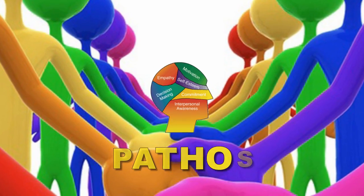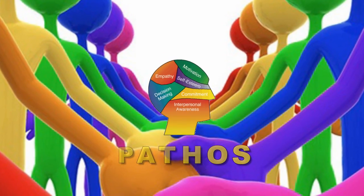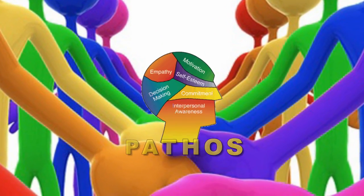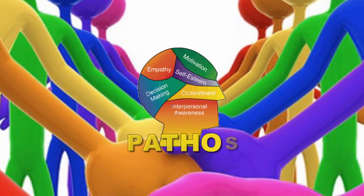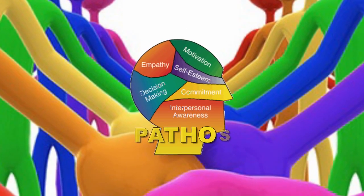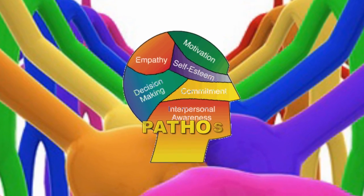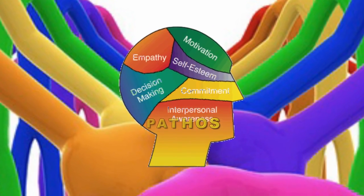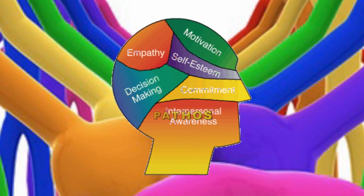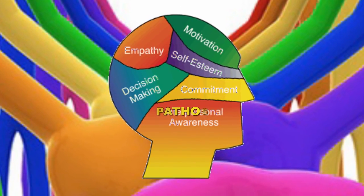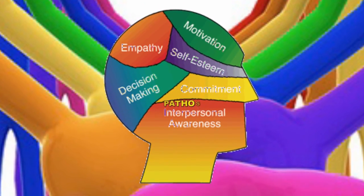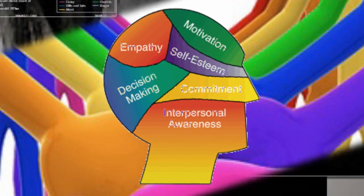The next type of proof is called pathos. This addresses the emotional appeal between the speaker and the receiver. It is essential to appeal to the emotions felt by the listener to become persuasive. In short, the speaker must have empathy.